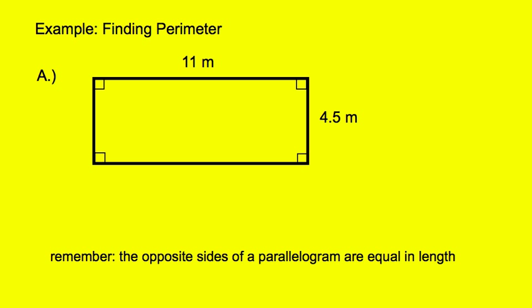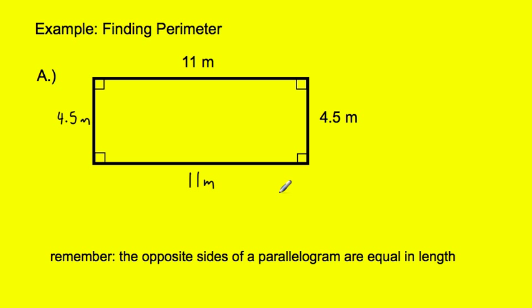Here's our example: finding the perimeter of a particular shape. We have four sides, but only two of them are labeled. We have to use problem solving. We know that two opposite sides are equal in length. So if the top is 11, the bottom also has to be 11. The right side is 4.5, so the left side also has to be 4.5 meters. Now we have everything figured out — we just have to add them all up. So we have 11, 4.5, 11, and 4.5.